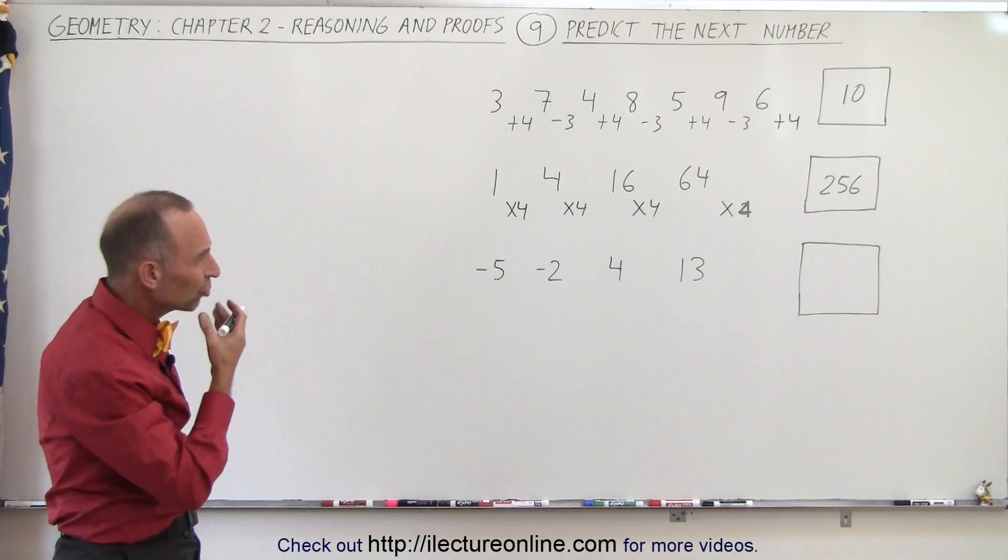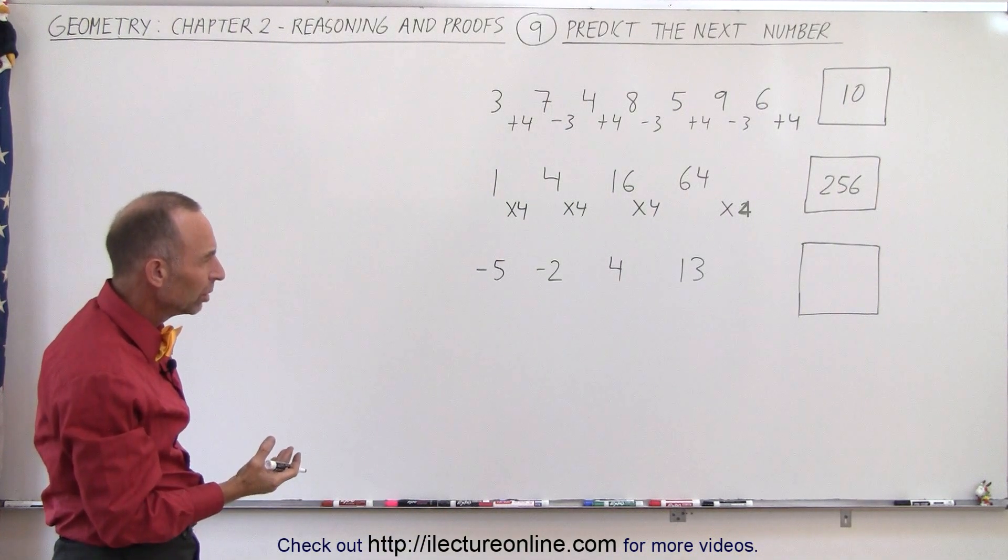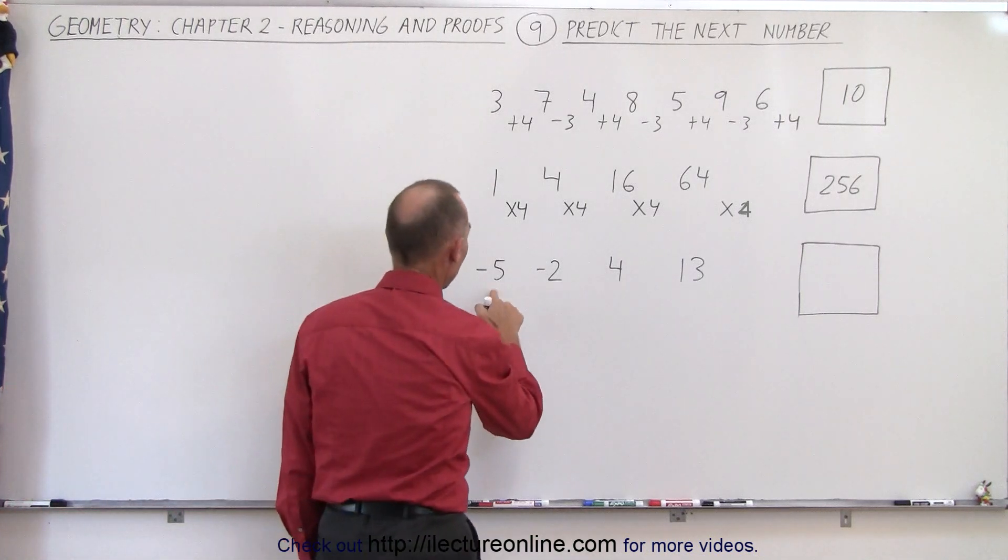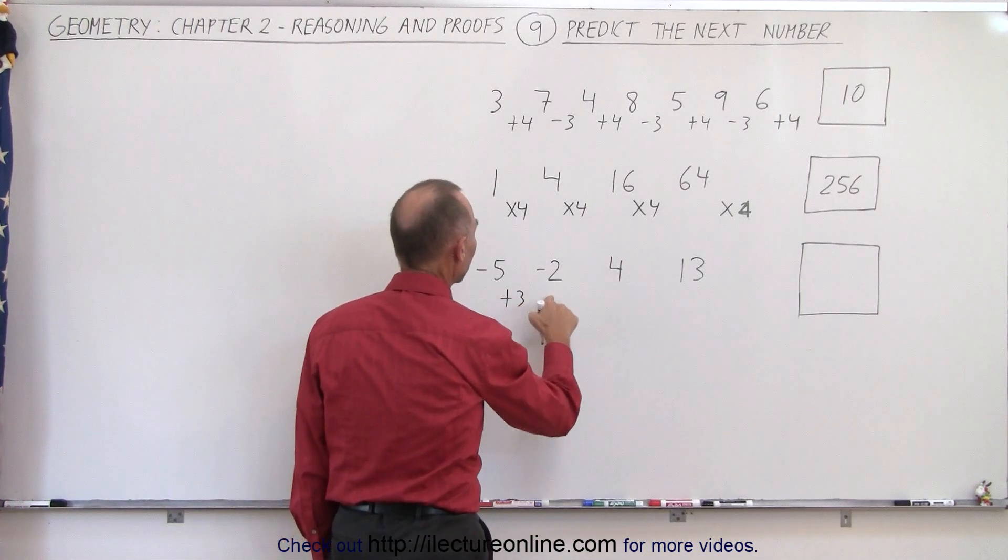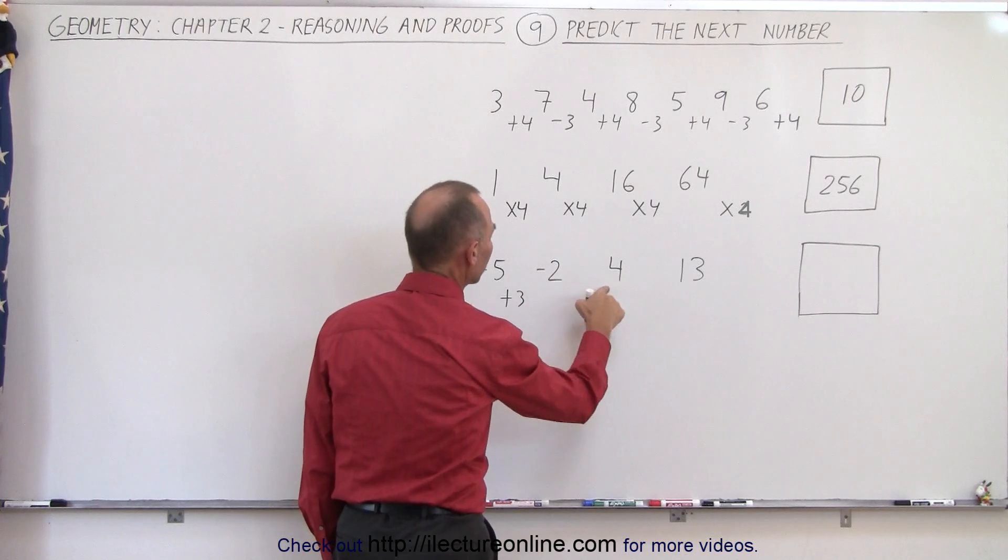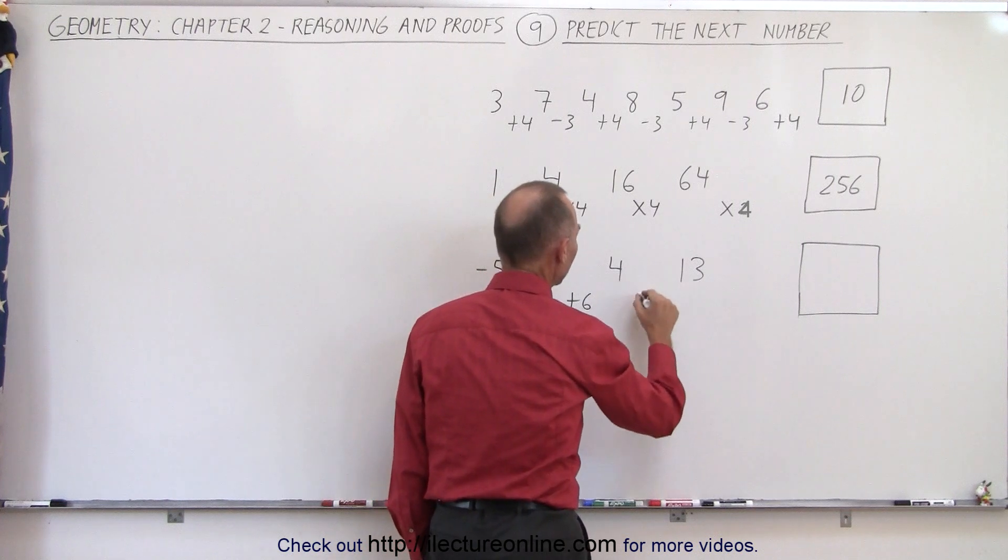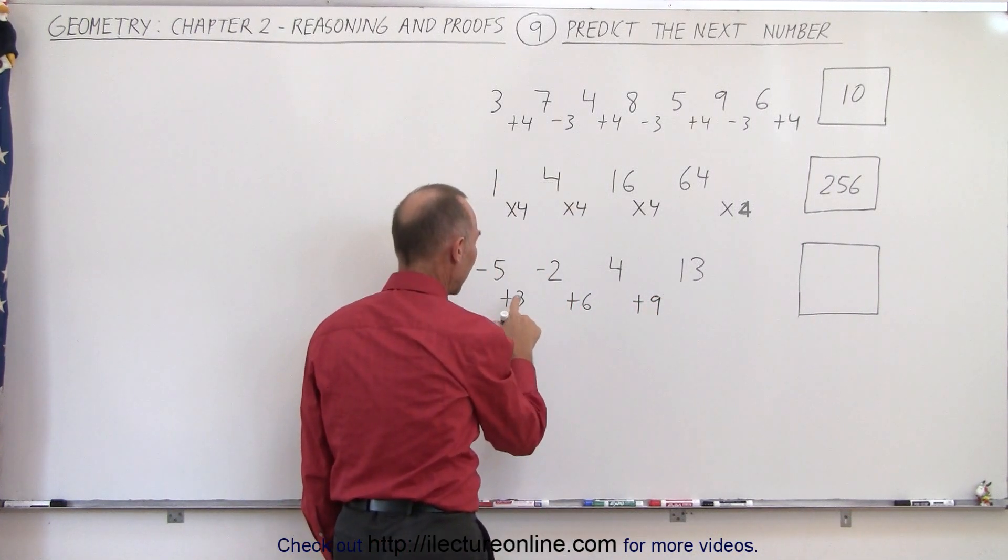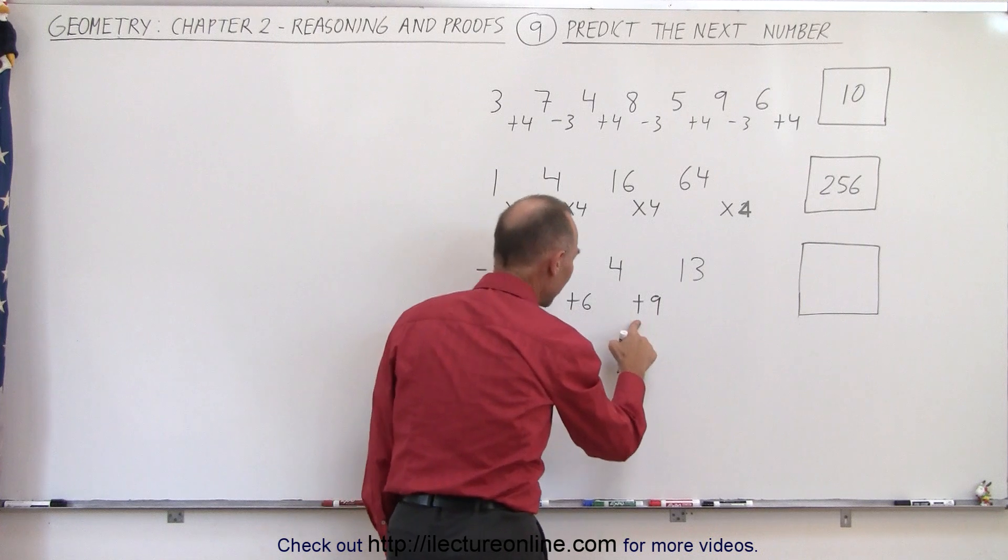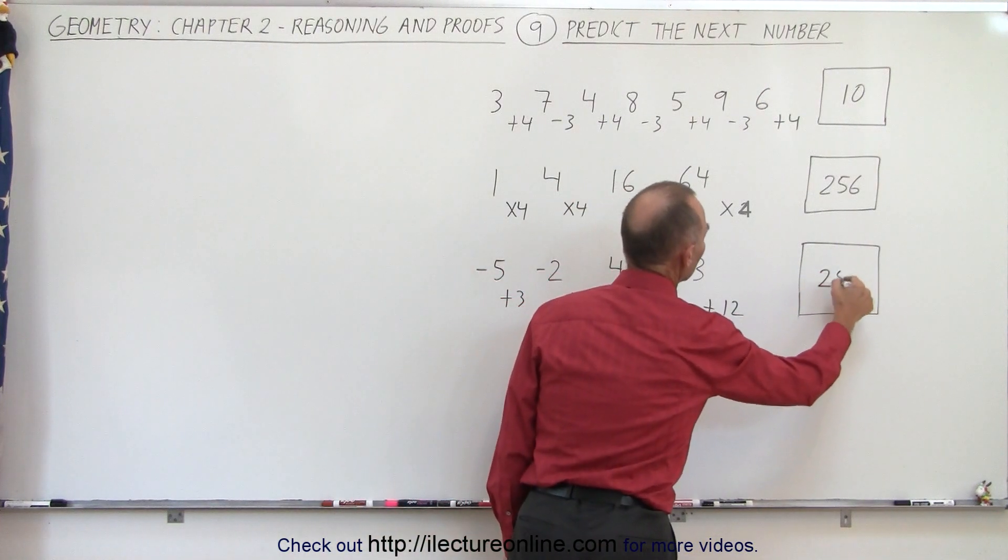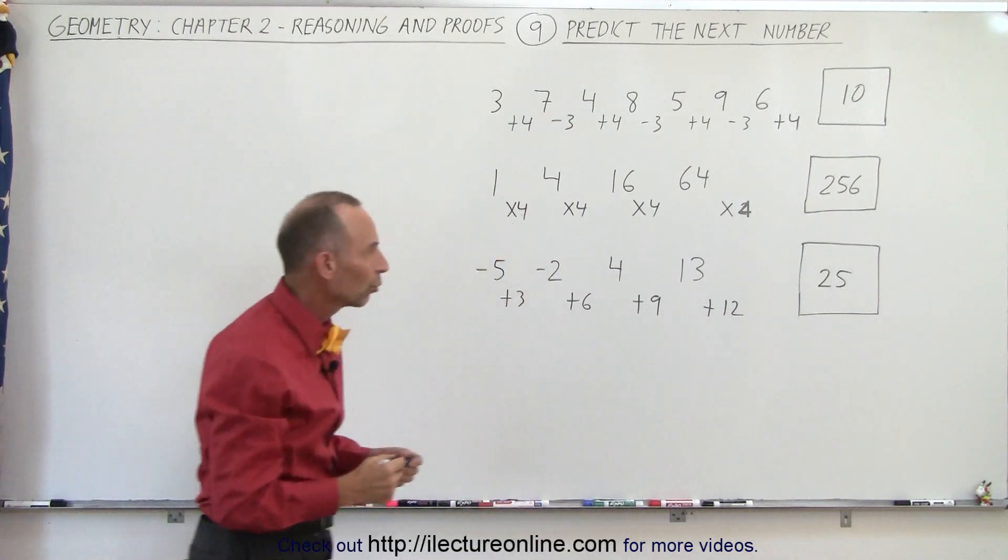Here again the changes appear to be somewhat small and I think I'm going to try to add the number and see what I get. I have to add plus 3 to get minus 2. From minus 2 to plus 4 I need to add plus 6. And from 4 to 13 I have to add 9. So it looks like there's a pattern. I add 3, I add 6, I add 9, and then I think I need to add 12. So the next number would then therefore be 25.